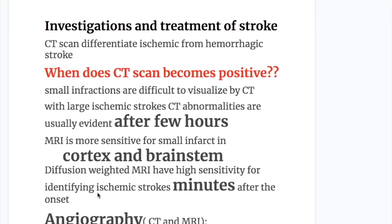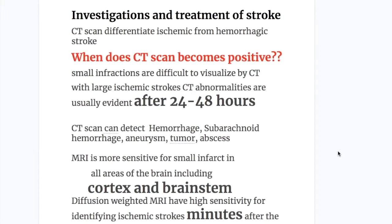For investigation, CT scan differentiates ischemic stroke from hemorrhagic stroke. Small infarctions are difficult to visualize on CT scan; with large ischemic strokes, CT abnormalities are usually evident after 24 to 48 hours, not immediately. CT scan can detect hemorrhages, subarachnoid hemorrhages, aneurysms, tumors, and abscesses. MRI is more sensitive for small infarcts in all areas of the brain, including cortex and brainstem.